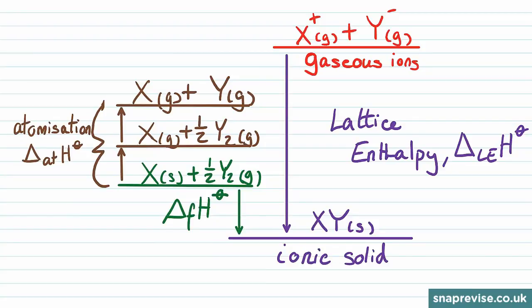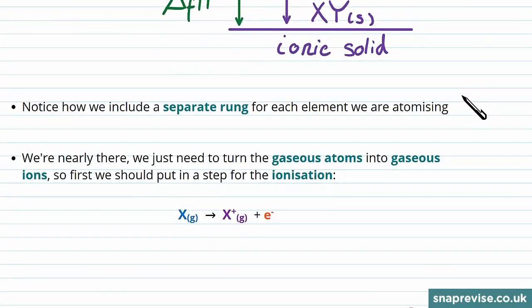And then in the next step it's Y that goes from being a diatomic gas to one mole of monatomic gas. Now we have X and Y in their monatomic gaseous form. We just need to think about giving them the correct charges to become the gaseous ions.